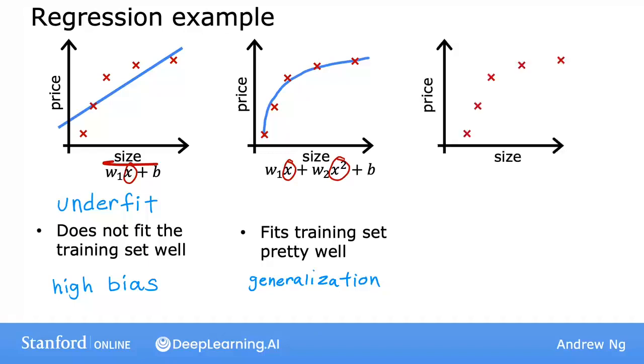Now let's look at the other extreme. What if you were to fit a fourth order polynomial to the data? So you have x, x squared, x cubed, and x to the fourth, all as features. With this fourth order polynomial, you can actually fit a curve that passes through all five of the training examples exactly. And you might get a curve that looks like this.